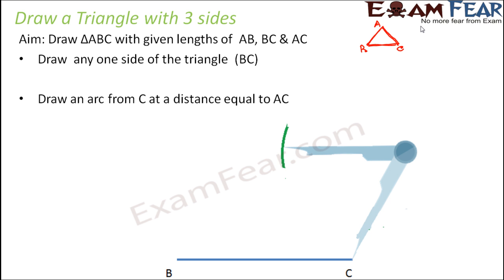Then what do you do? Next you draw an arc from point C at a distance equal to AC. The length of AC is also known to you. AC is going to be this side, somewhere here. But what is the length of this side?